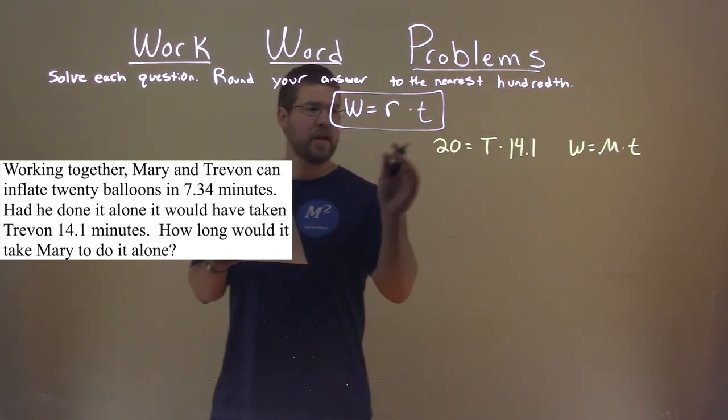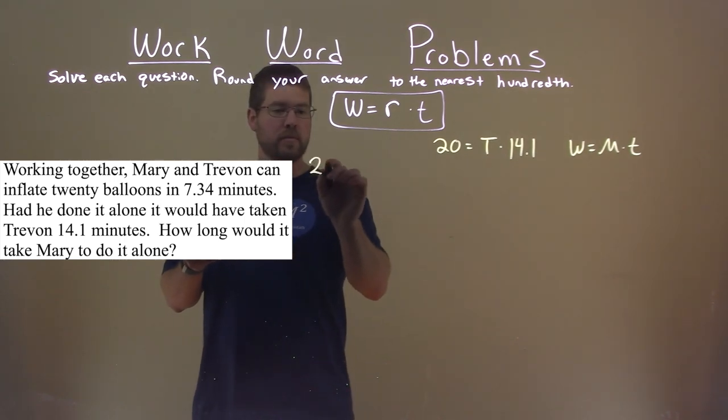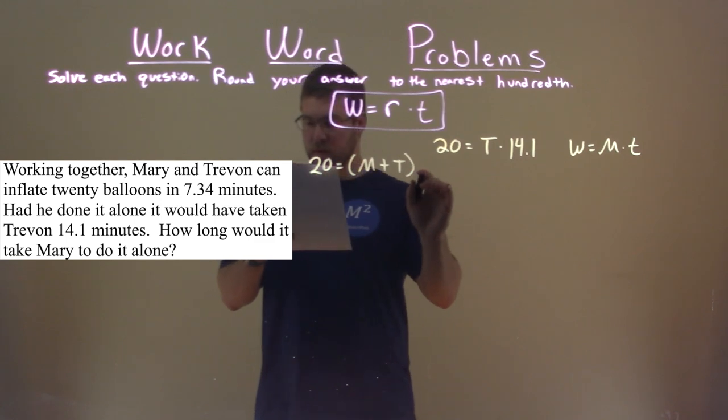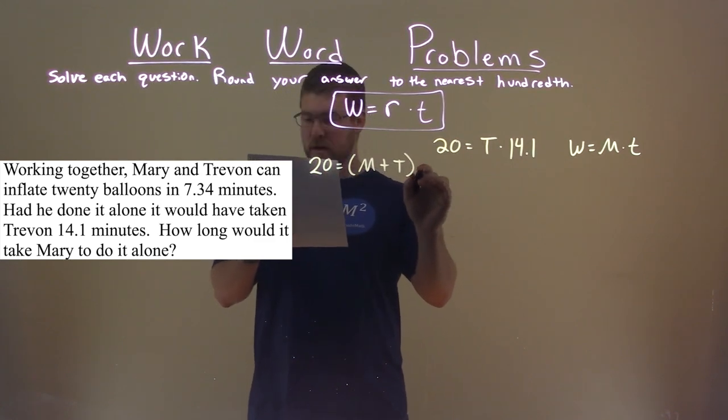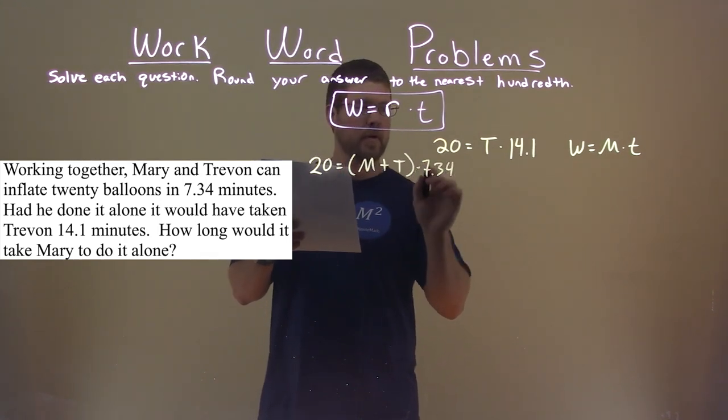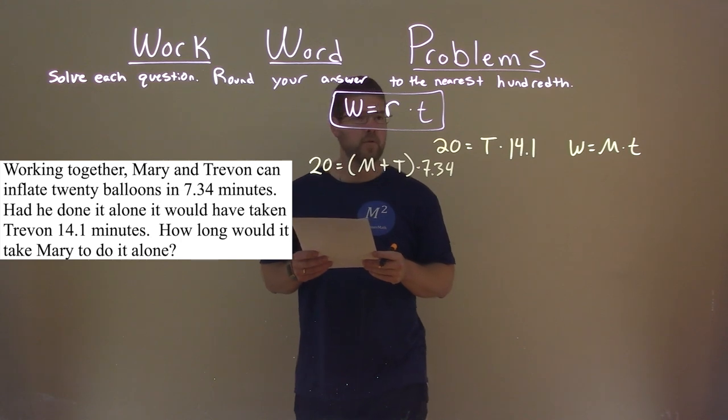But we know that if they did it together, the work of 20 balloons, and we had Mary's rate plus Trayvon's rate, it took them a total of 7.34 minutes. Okay, so where can we go from here?